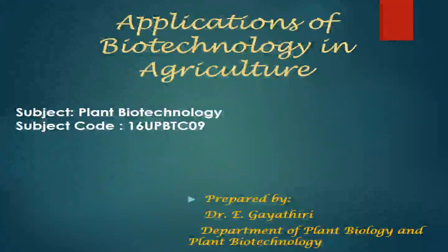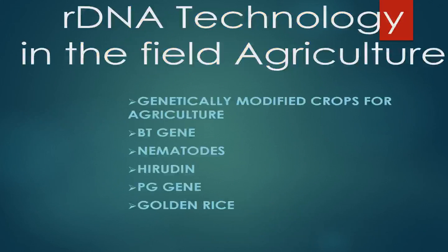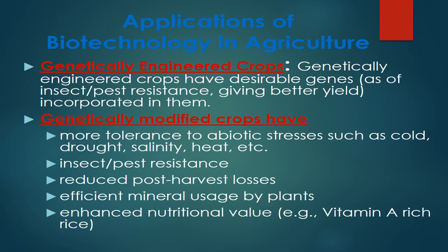Hello everyone. In this video we will discuss the application of biotechnology in the field of agriculture. There are many interesting things scientists have achieved in the biotechnology field. We will start with how BT gene, nematode growth hormone gene, hirudin gene, PG gene, and beta-carotene genes are genetically modified using rDNA technology.